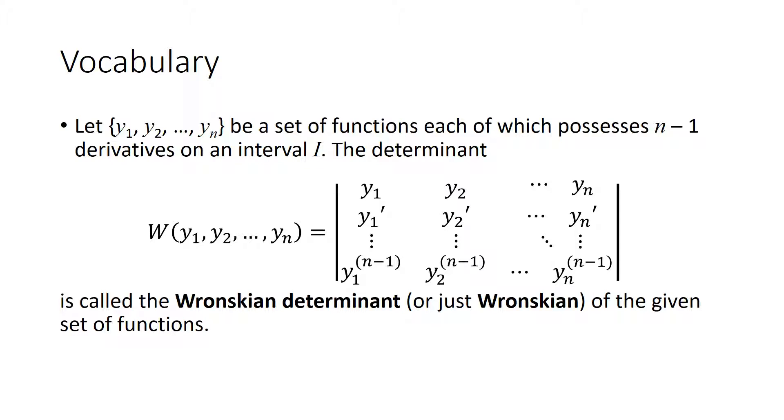A little vocabulary. Let Y1, Y2, all the way up to Yn be a set of functions, each of which possesses n minus 1 derivatives on an interval I. The determinant shown below is called the Wronskian determinant, or just the Wronskian, of the given set of functions.